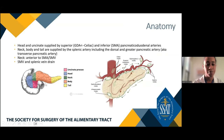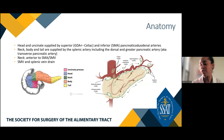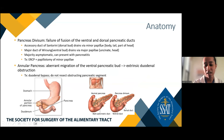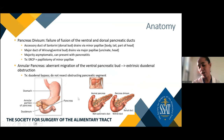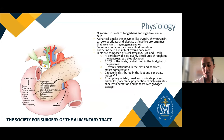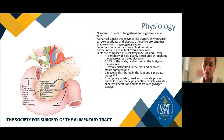Moving on to pancreas. An important landmark is the neck, because behind the neck is where the SMA and SMV are — critical when thinking about pancreatic cancer resectability. Embryological issues include pancreas divisum, where the ducts do not fuse and patients can have pancreatitis, and annular pancreas, where the ventral bud does not rotate and encircles the duodenum causing obstruction — treatment is a duodenal bypass.